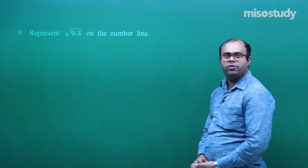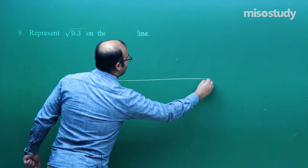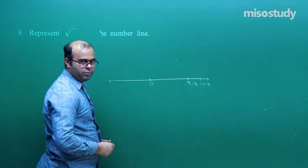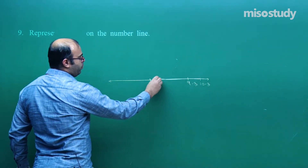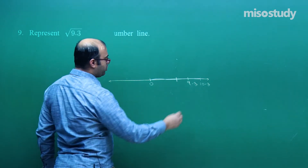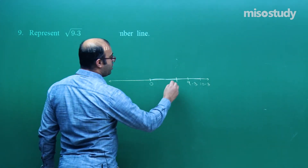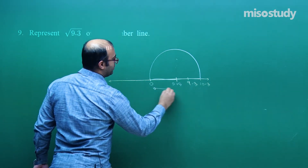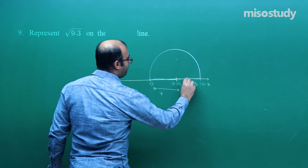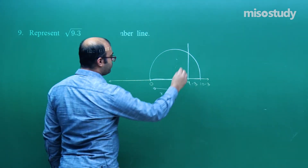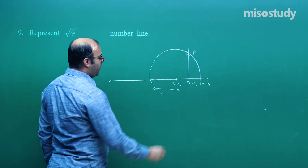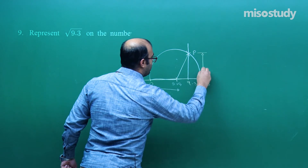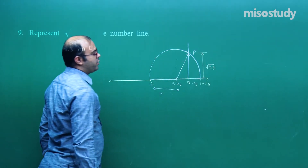Represent √9.3 on the number line. We plot 0 and 9.3 on the number line. Then we mark a point at 10.3 (one unit beyond 9.3), and take the midpoint of 0 and 10.3, which is 5.15. We draw a semicircle with center 5.15 and radius 5.15. We draw a perpendicular at 9.3 which intersects the semicircle at point P. The length from 9.3 to P is actually √9.3.